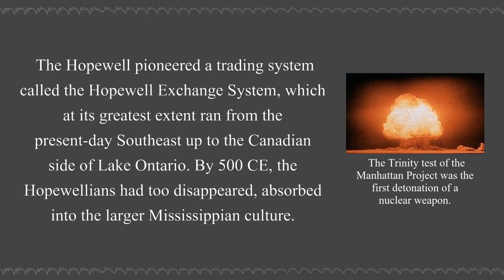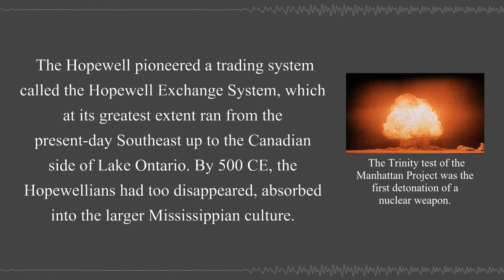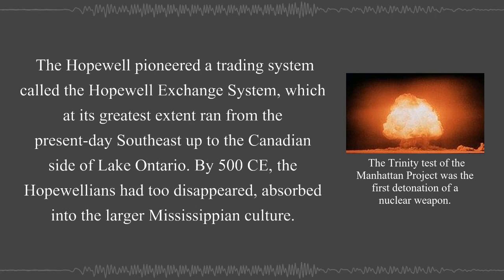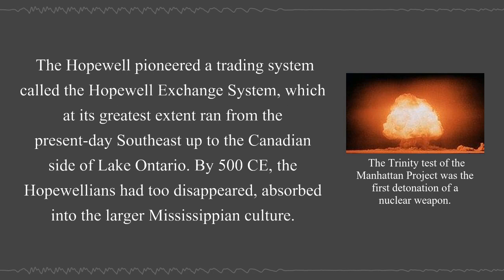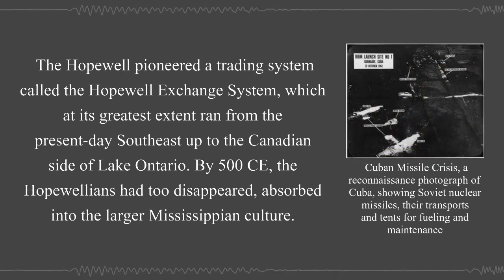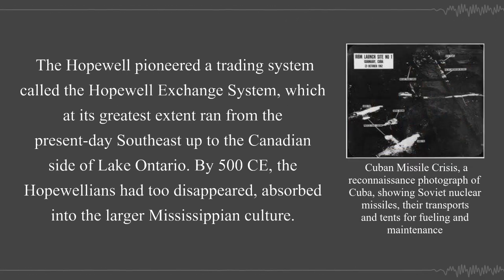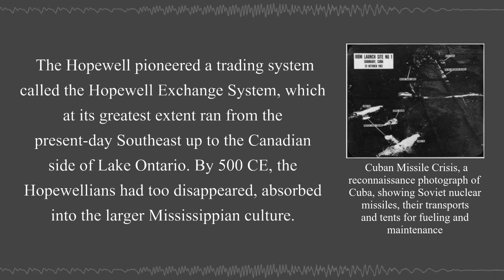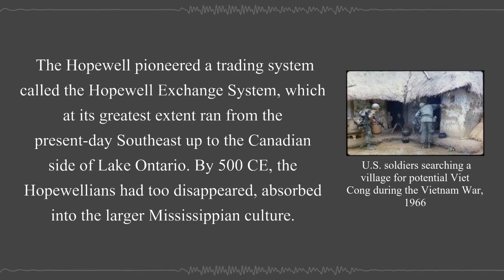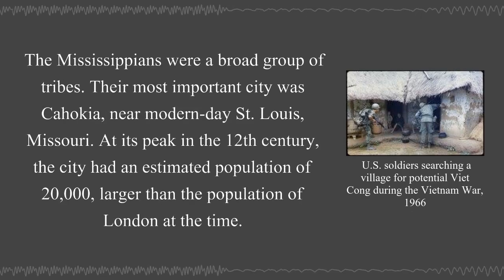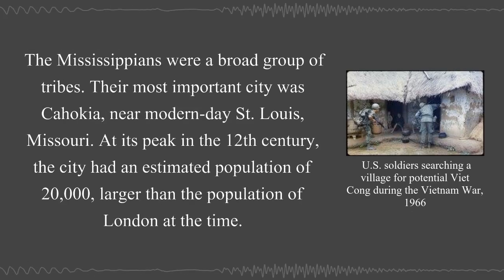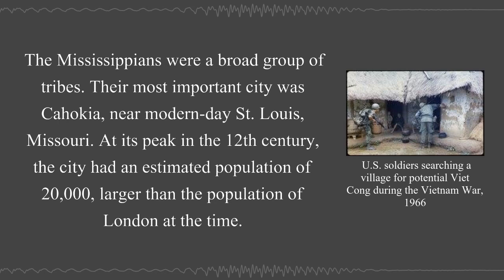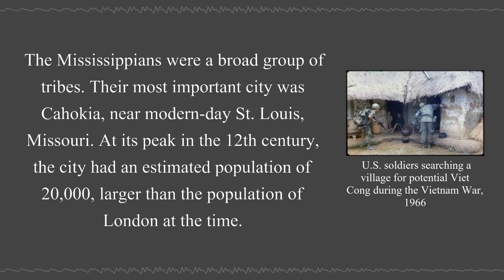The Hopewell pioneered a trading system called the Hopewell Exchange System, which at its greatest extent ran from the present-day southeast up to the Canadian side of Lake Ontario. By 500 CE, the Hopewellians had too disappeared, absorbed into the larger Mississippian culture. The Mississippians were a broad group of tribes, and their most important city was Cahokia, near modern-day St. Louis, Missouri.